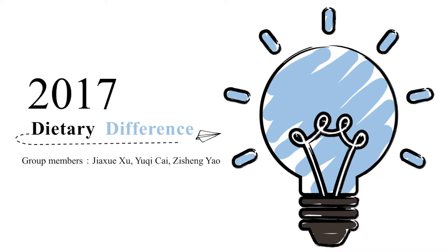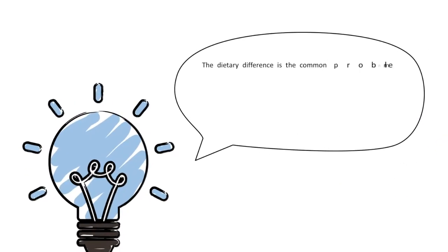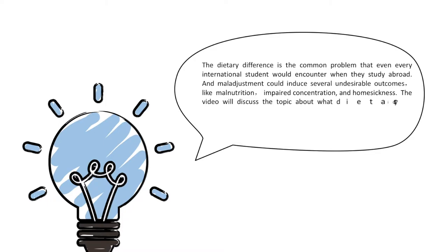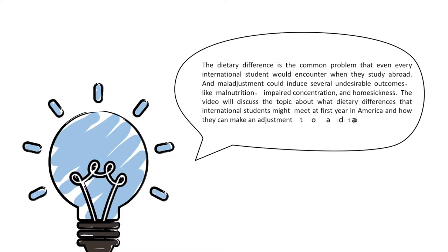Hello, students of the 1901 class. Our group topic is dietary differences. As we all know, dietary differences is a common problem that every international student would encounter when they study abroad. The maladjustment could induce several undesirable outcomes. In this video we will discuss what dietary differences international students might meet in their first year in America and how they can make an adjustment to adapt.